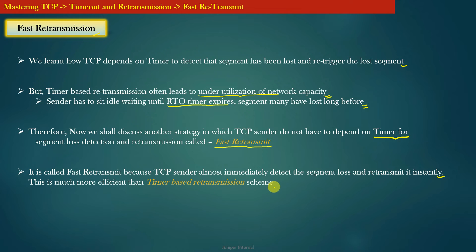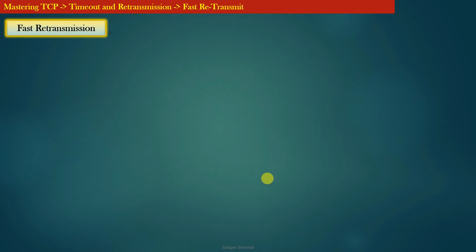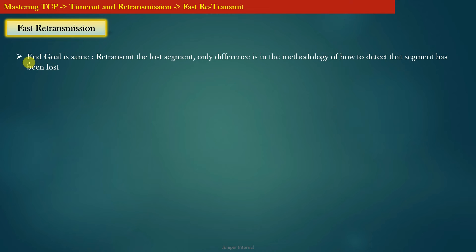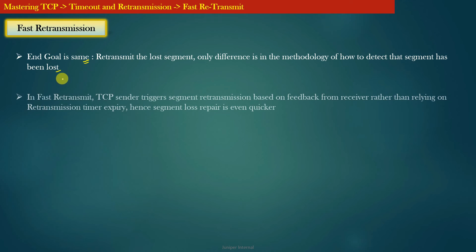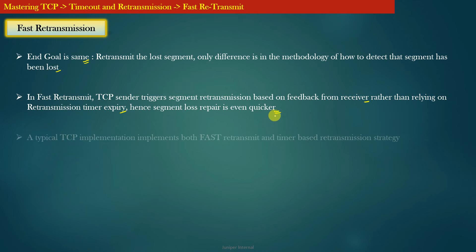The end goal of fast retransmission is the same as that of timer-based retransmission — retransmit the lost segment. The only difference is in the methodology of how segment loss is detected. In fast retransmission, the TCP sender triggers segment retransmission based on feedback from the receiver, rather than relying on retransmission timer expiry. Hence, segment loss repair is even quicker.